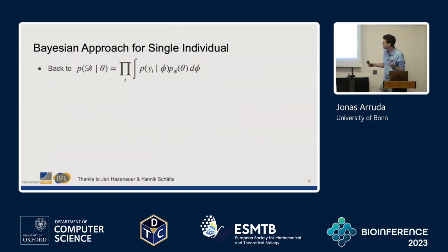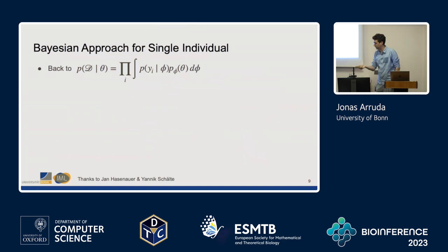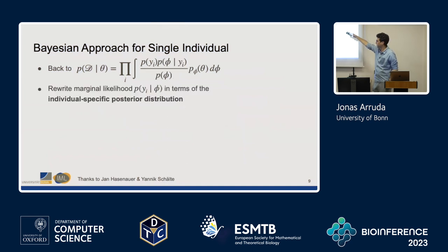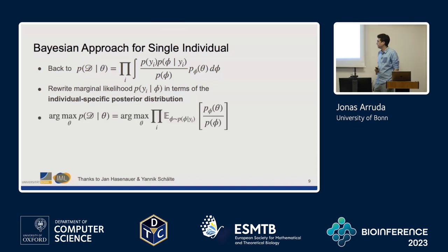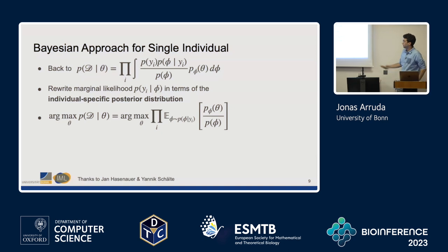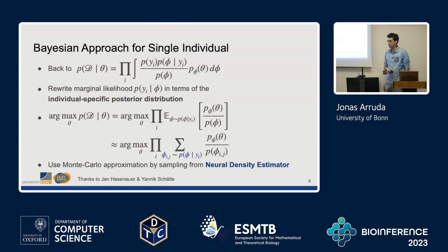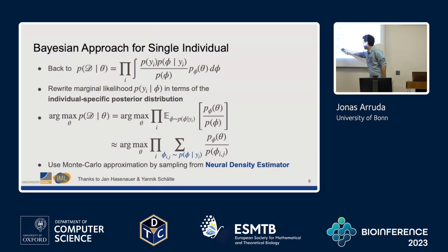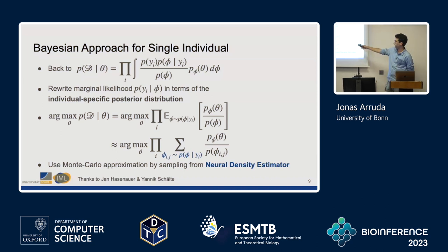How does this relate to mixed effect models? We take a Bayesian approach for every single individual. We have this marginal likelihood in our integral; we replace it with the posterior using Bayes' theorem. It turns out this can be phrased as an expectation. If you maximize over theta, this distribution for our data drops out, and we just have an expectation from our posterior distribution. If we can sample from this posterior distribution using the neural density estimator, we can evaluate the product using a Monte Carlo approximation and compute the overall likelihood for the whole population.